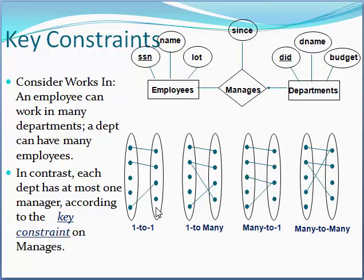An example of one-to-one: one entity has one department related. Like, a chairman runs a department, a country has a president, or a manager manages a branch. This is called a one-to-one relationship. The next relationship type is one-to-many.